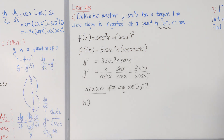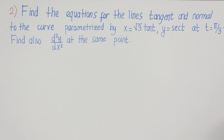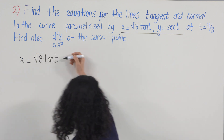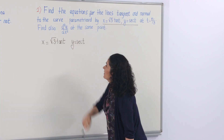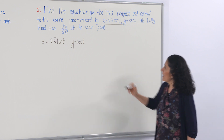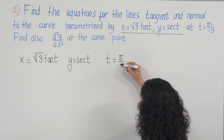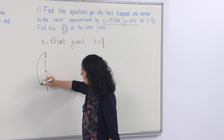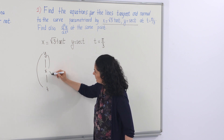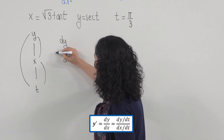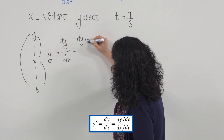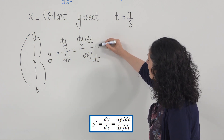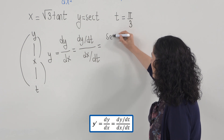Now a question on parametric curve slope. We have a parametric curve with x = √3 · tan(t) and y = sec(t), and the point is given at t = π/3. Applying the formula: dy/dx = (dy/dt) / (dx/dt). The derivative of sec(t) with respect to t is sec(t)·tan(t), and the derivative of √3·tan(t) with respect to t is √3·sec²(t).